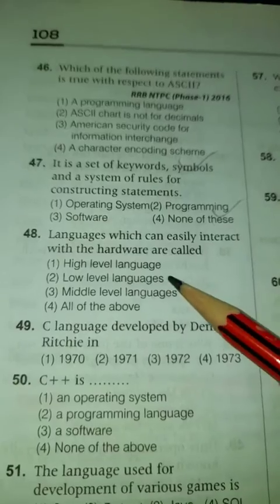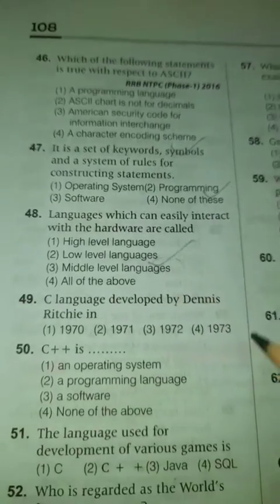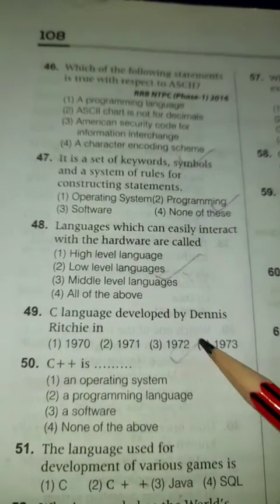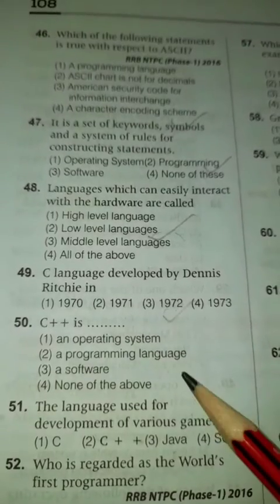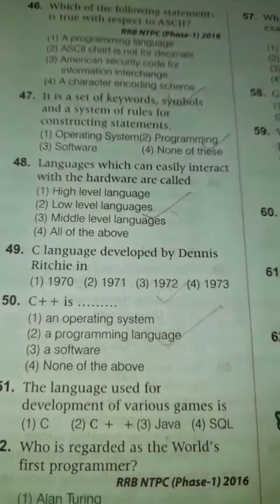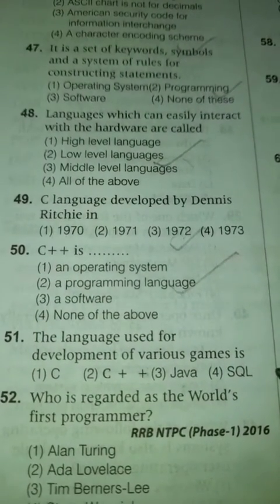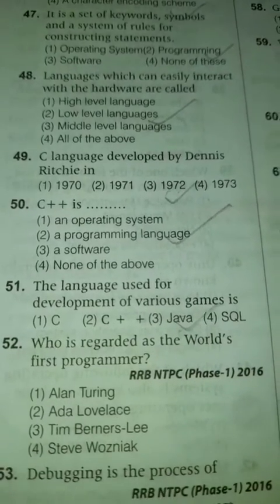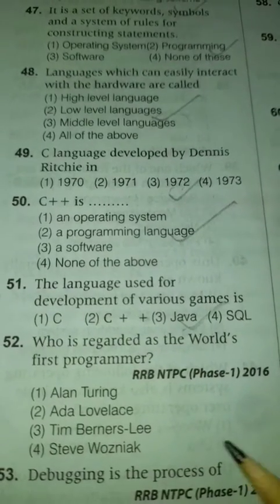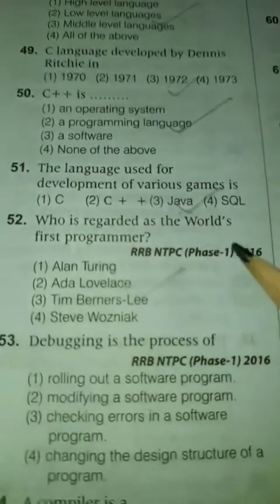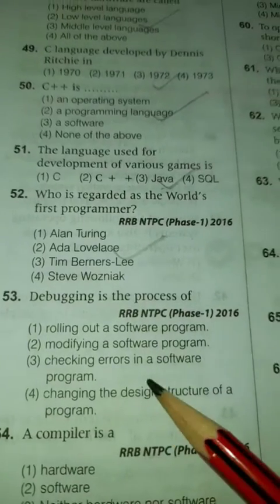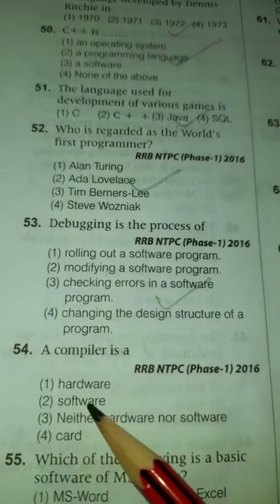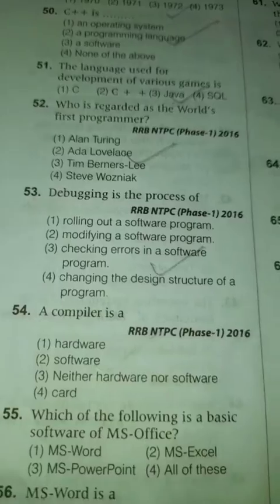Languages that can easily interact with hardware and software are called low-level languages. The C language was developed by Dennis Ritchie in 1972. C++ is a programming language. The language used for the development of various games is Java. Who is regarded as the world's first programmer? Ada Lovelace.